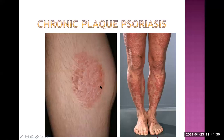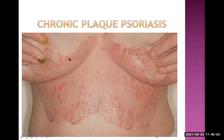Some other presentations of chronic plaque psoriasis include rounded lesions that appear circular — these can be called guttate psoriasis, or sometimes they are highly confusing with plaque psoriasis because the lesions fuse with each other and almost look like a plaque. The treatment is similar in this condition so it doesn't really matter much.